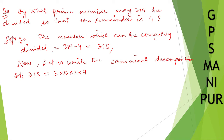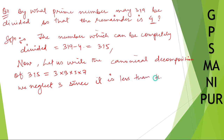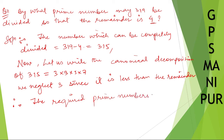Now we have the canonical decomposition of 315. The remainder must be 4, so 3 is excluded — we neglect 3 since it is less than the remainder. How can the remainder be 4 if we divide by 3? Therefore, the required prime numbers are 5 and 7. I hope that is clear. Thank you so much, we will meet in the next video.